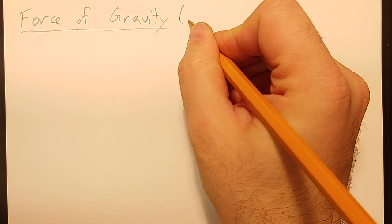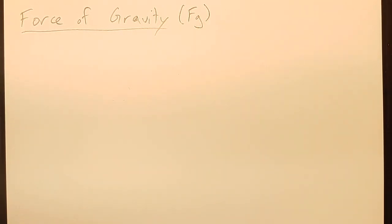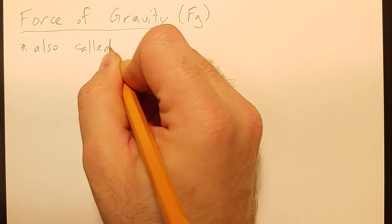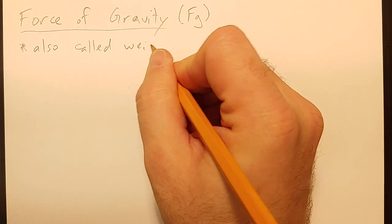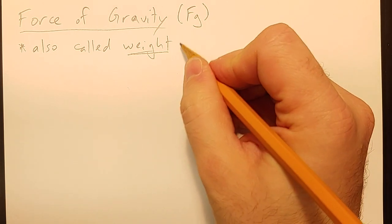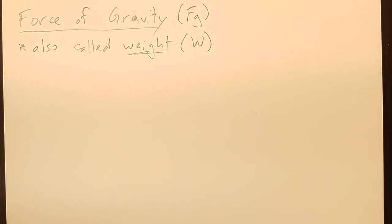So the force of gravity, which we're going to call Fg. First off, the force of gravity is also called weight. And the abbreviation for that sometimes would be a W. And so I'm generally going to use Fg as the abbreviation for the force of gravity, because it's consistent with all the other notation we use. It's F because it's a force, and then the subscript tells us what type of force it is.